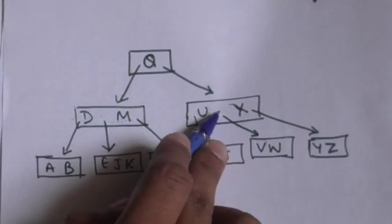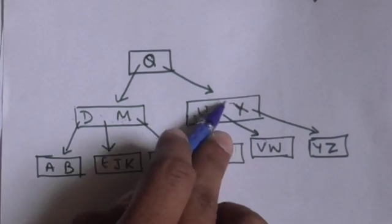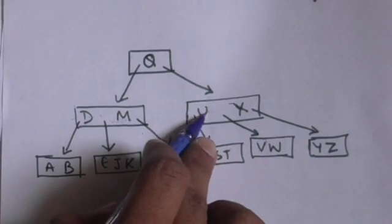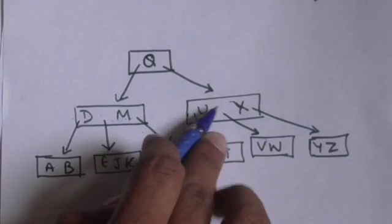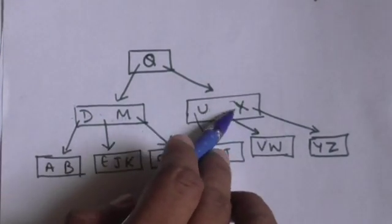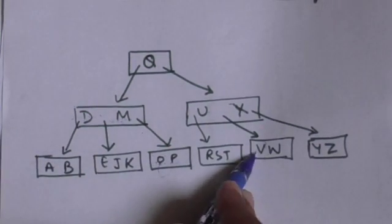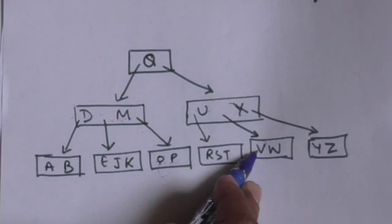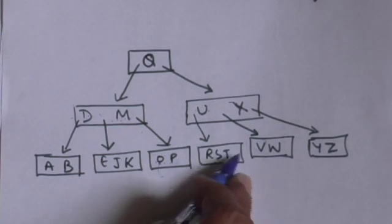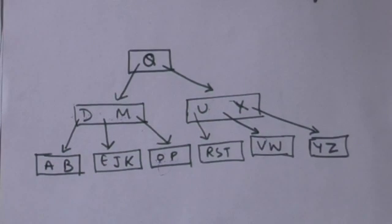V is greater than U but smaller than X, so we move to the child node at the left of key X. When we compare the first key of this node with V, we find that the first key is V. In this way we can search the key V in this B-tree.